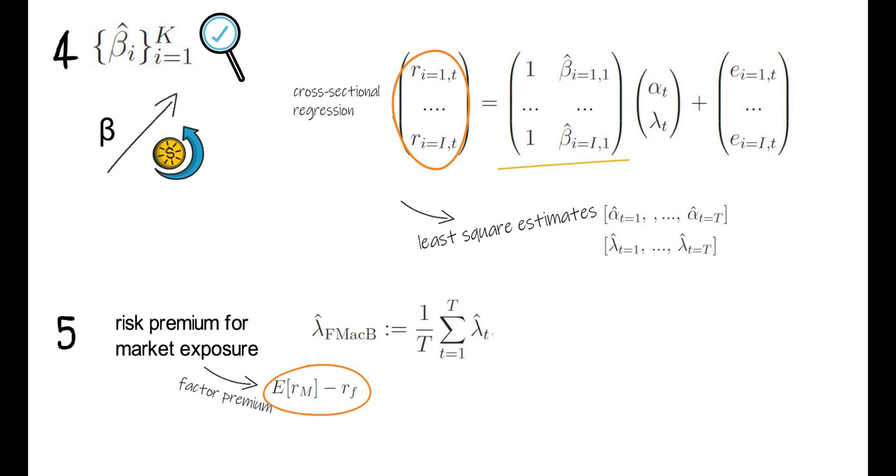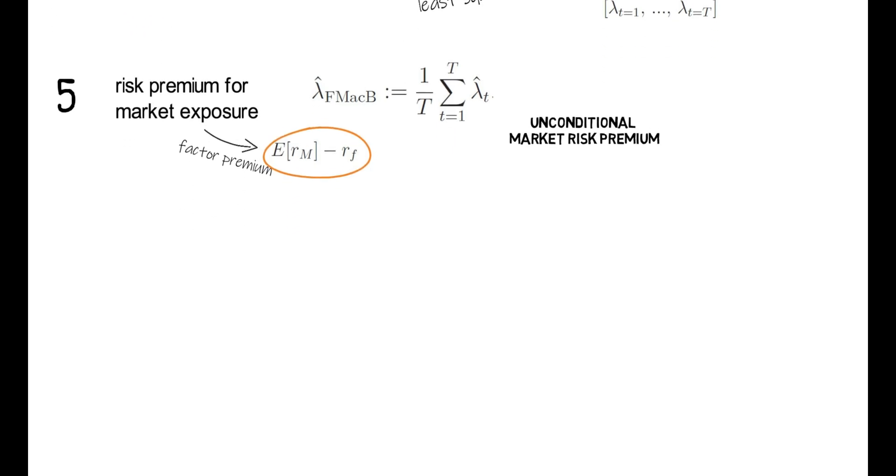You see it's the unconditional expectation, which they approximate here with the sample mean. And now step 6.